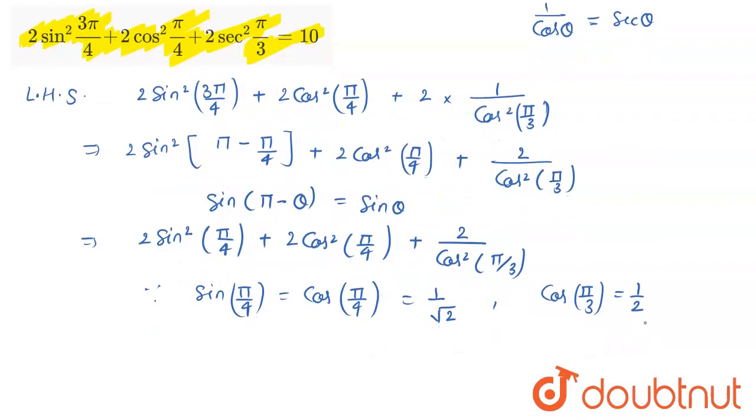Now, you just have to take these values and put them here, so it becomes twice square of 1/√2, plus twice square of 1/√2 again, plus 2 upon (1/2) whole square.